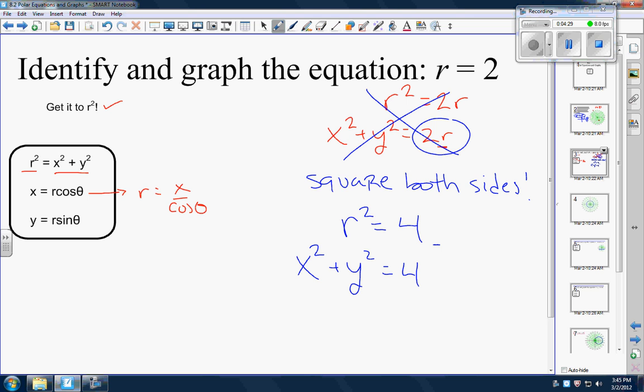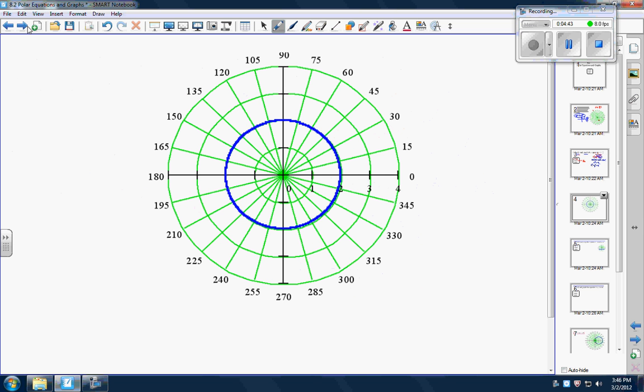Now I don't have to worry about having an extra little r over here and I can just say that's a circle. x squared plus y squared equals four. So that's the identify piece. Now I just got to graph it. So find your circle equation on your yellow sheet. x squared you can have the centers and whatnot and it always equals r squared. That's it.